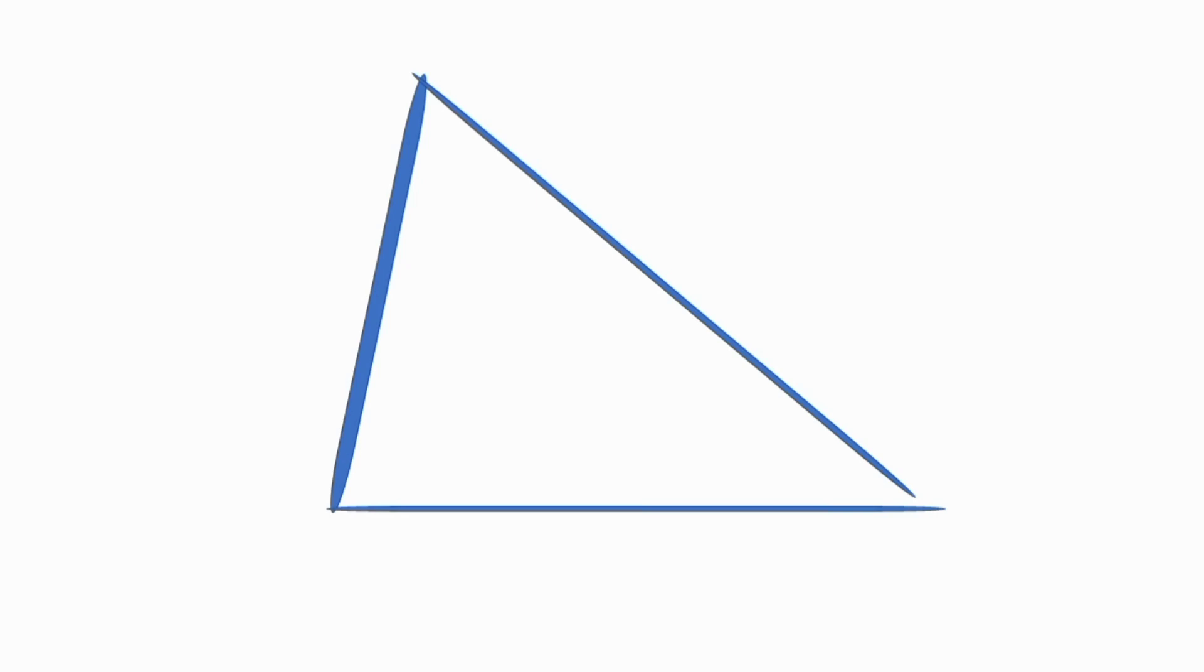Because the sides of a scalene triangle have different lengths, the angles of a scalene triangle will also be different. This means that a scalene triangle is also an irregular triangle.